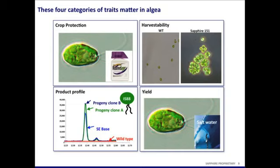What we did immediately was we were able to make algae roundup resistant. It's a great herbicide — one of the most powerful herbicides that has shaped the modern agricultural revolution. Now I can protect my crop. That was the first trait that we achieved: roundup resistance.